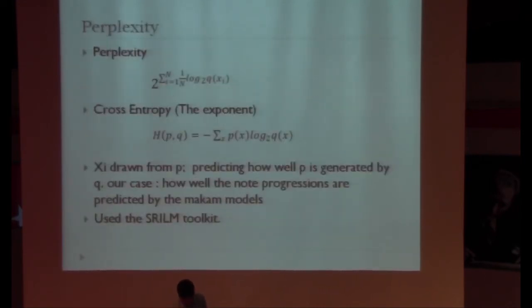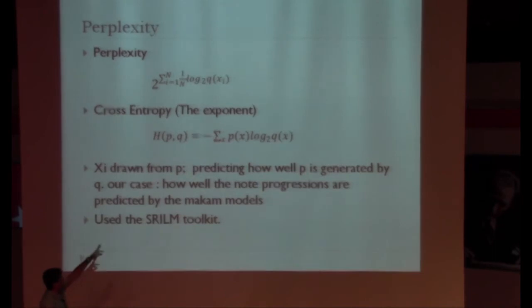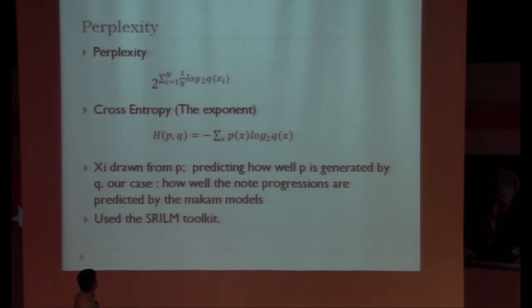I'll be talking about perplexity in more detail. It's basically 2 to the minus cross-entropy. Xi's are drawn from P, another model. It predicts how well P is generated by the Q model. In our case, we would like to test how well the note progressions are predicted by the MACAM models in our database. For all these calculations, we used the SRLM toolkit, which is a very powerful toolkit that is being used for natural language processing.